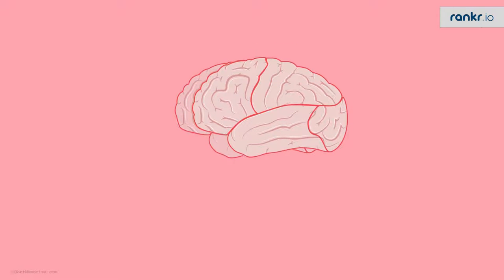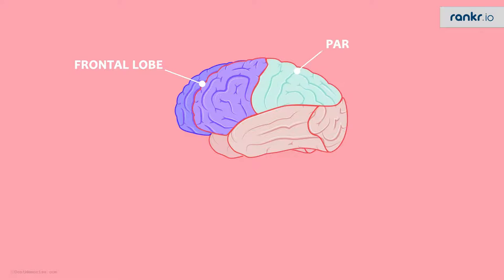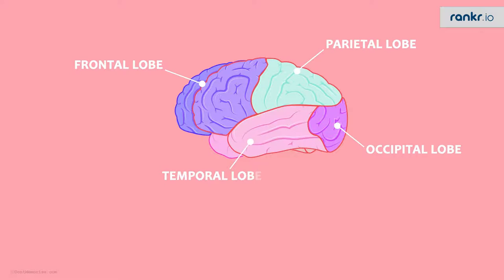The major lobes of the brain include the frontal lobe, the parietal lobe, the occipital lobe, and the temporal lobe. What are the roles of these different lobes?